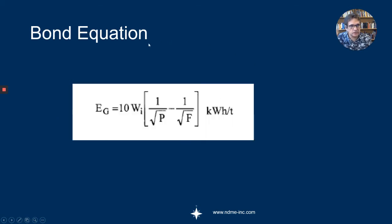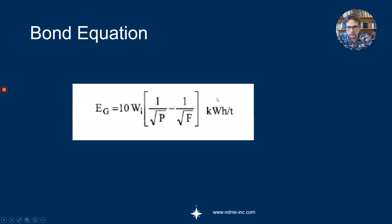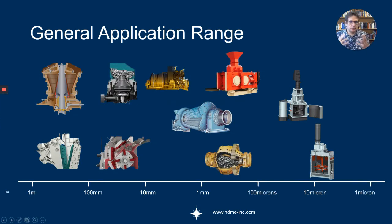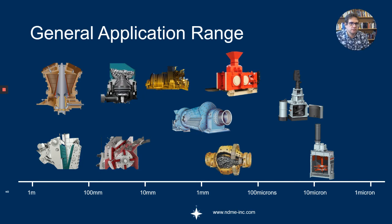Bond developed an equation where the work index relates the energy to the product size and the feed particle size. On the curve, it sits halfway between Rittinger's and Kick's work. This equation is fundamentally used in industry to calculate the energy consumption in various comminution steps. It's very rare that you get a comminution device that is going to do all the comminution in one step for you.